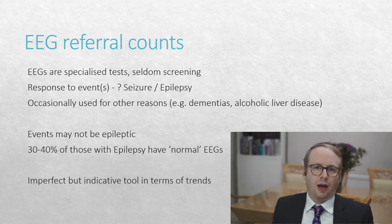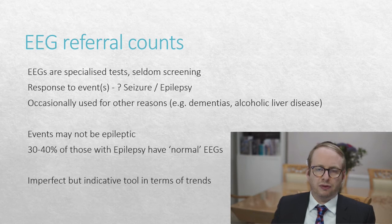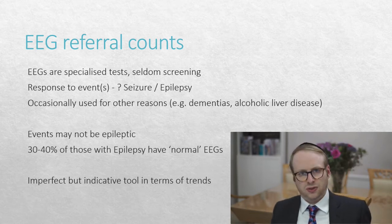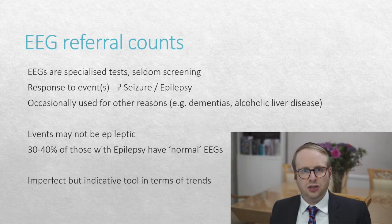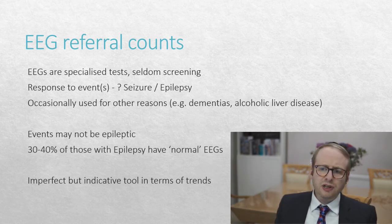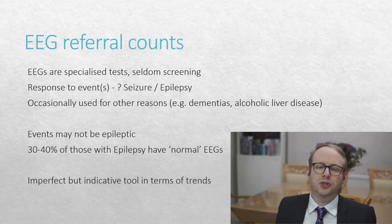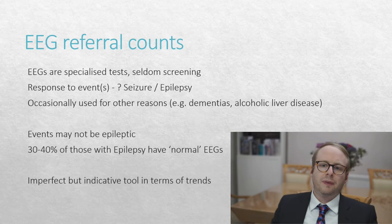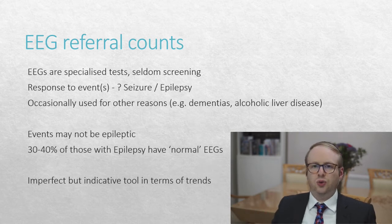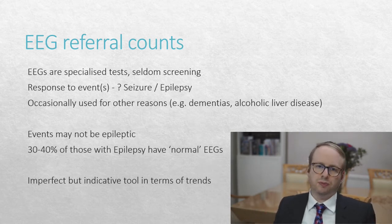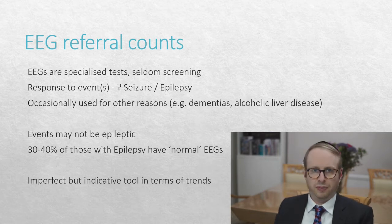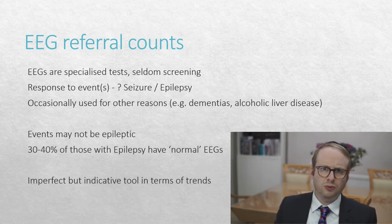Events may not be epileptic. People can have syncope, a drop in blood pressure — that doesn't mean they have epilepsy. They may have a cardiac arrhythmia. And even amongst those with undoubted epilepsy, about 30 to 40 percent will have a normal EEG. So having an EEG does not equate directly to epilepsy. But there's certainly a relationship between the proportion of people who have an EEG and those who have had a seizure or do have epilepsy. It's an imperfect but indicative tool, certainly in terms of trends.